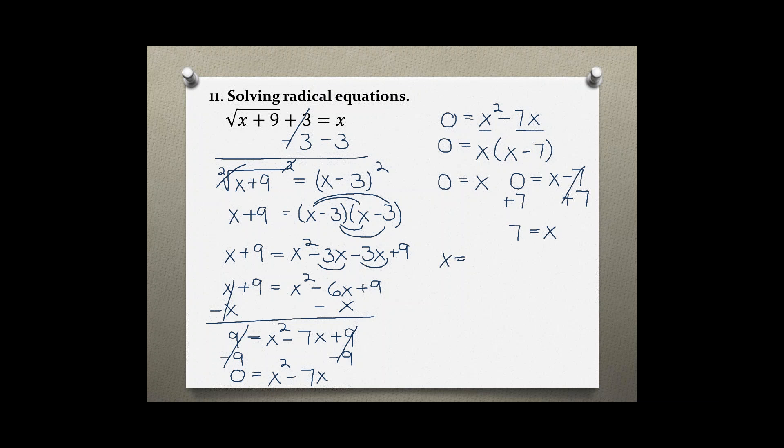My two solutions are x equals 0 and x equals 7. I'm supposed to check because it could be that either both of them or one of them doesn't work out.